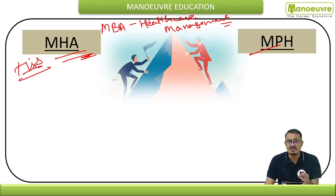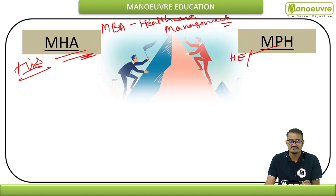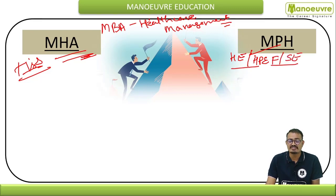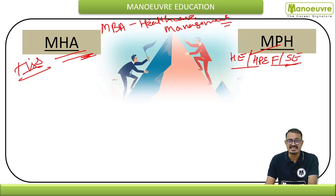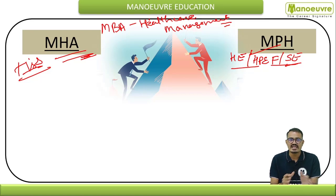The MPH — Master in Public Health — offers specialization in three different domains: Health Administration, Health Policy Economics and Finance, and Social Epidemiology. If you have a keen interest in health policy, economics, finance, policymaking, disease mortality, morbidity, and communications, this program is for you. You should have a science background or core knowledge of hospitals, departments, diseases, and everything related.